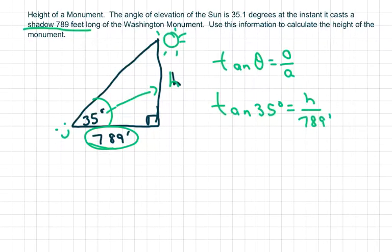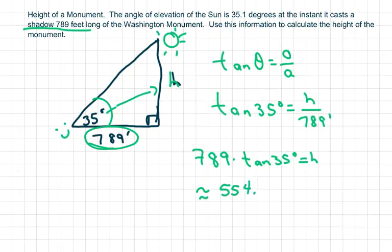Cross multiply, and you get 789 times tan of 35 degrees equals your height. And you use your calculator.